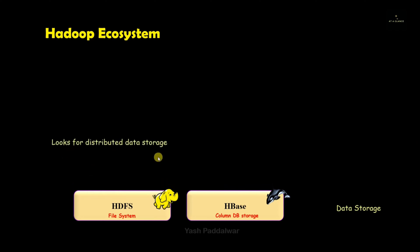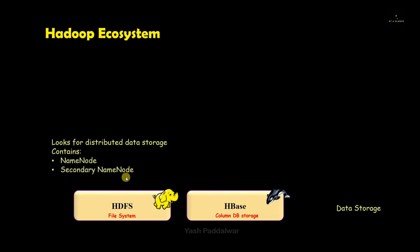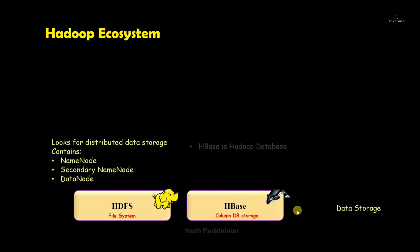First let's look at the HDFS component, which comes under the data storage section. We have already discussed HDFS inside the Hadoop architecture — you can see that video in the big data analytics playlist. As an overview, HDFS is used for storage of data into blocks. Its master-slave architecture has the name node, secondary name node, and data node. The name node comes under the master part, the data node stores the actual data, and the name node controls and tracks the data node.